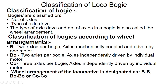The classification of bogies — bogies are classified on the basis of number of axles and types of axle drives. The type of axle drive and number of axles in a bogie is called the wheel arrangement. According to the wheel arrangements, bogies are classified as B-type, Bo-type, and Co-type bogies.